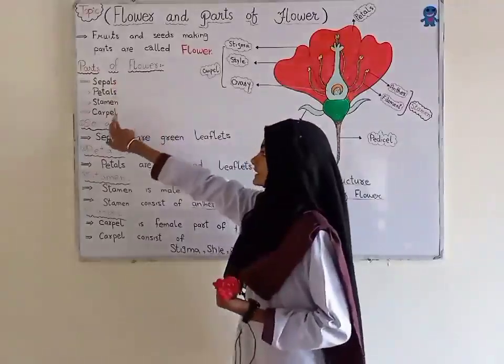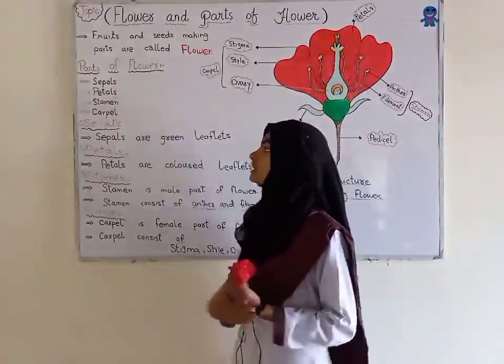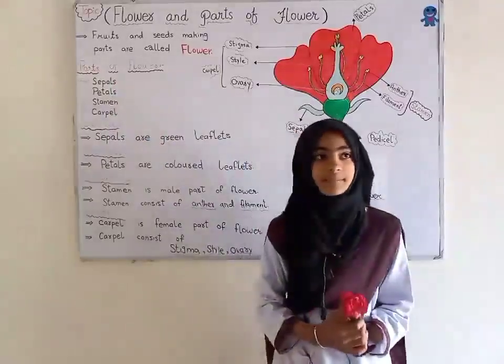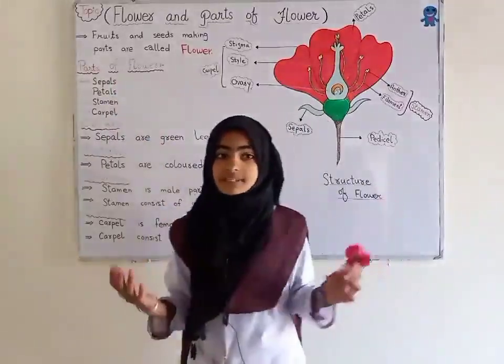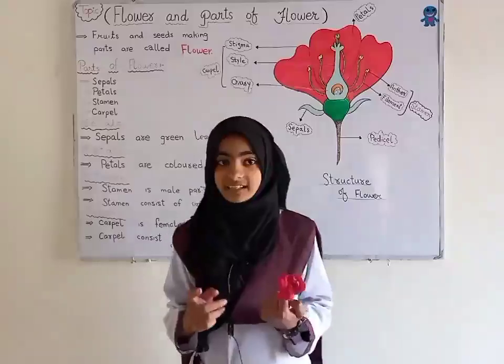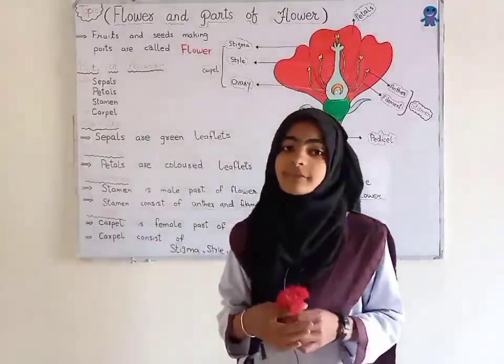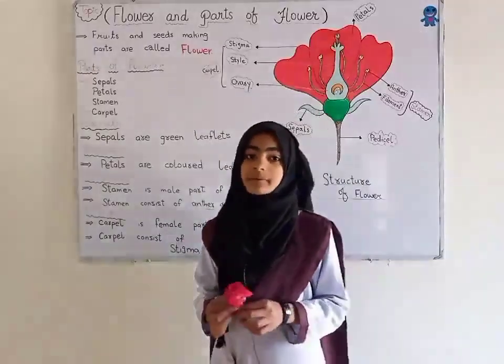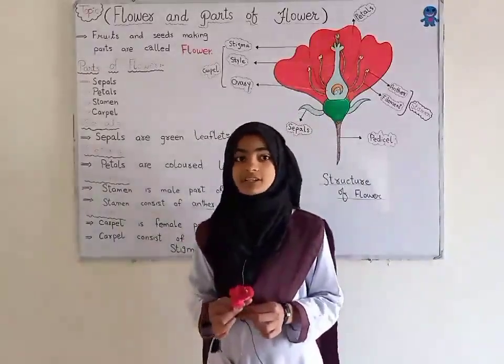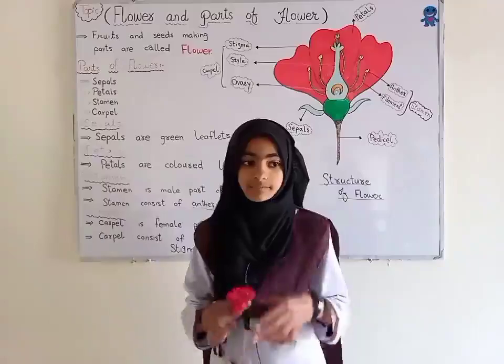The four parts are: sepals, petals, stamen, and carpel. First is sepals. Sepals are green leaflets. Sepals form the first whorl. Sepals protect the internal structure of the flower.